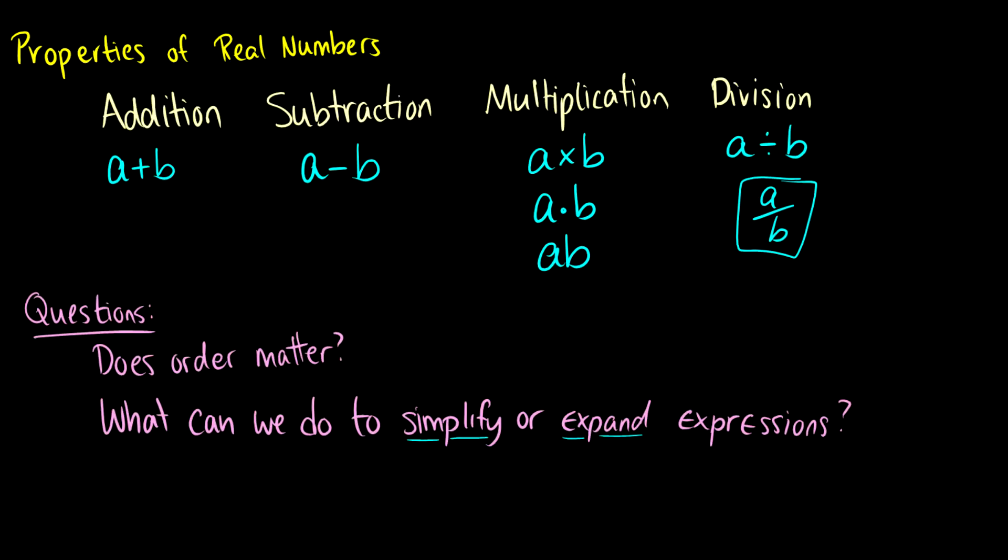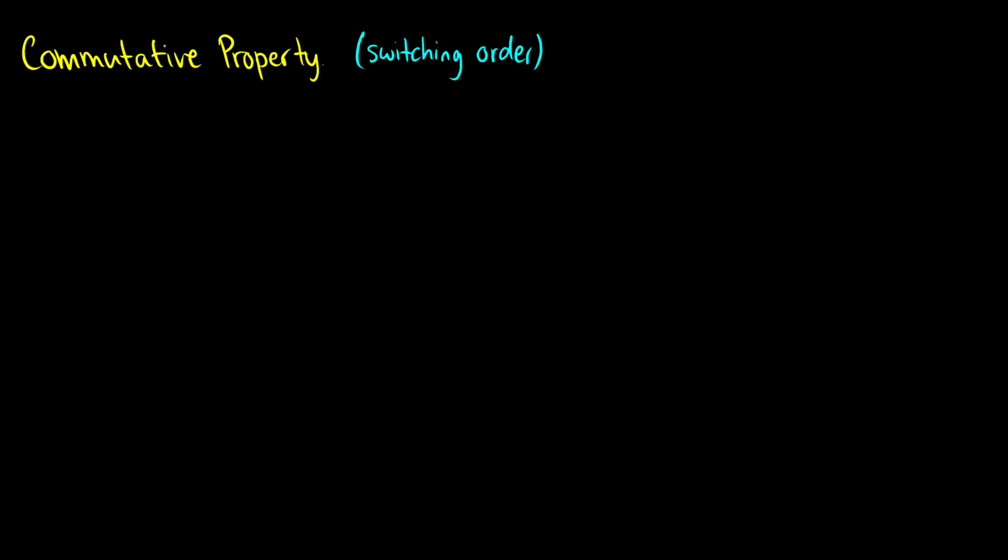So we have three properties here. You don't have to learn the names, but I think it's really good to, because in discrete math, you'll come across this some more. And in later mathematics, it's good to know these names. So one is the commutative property. And that means that we can switch the order of how we do things. So if we have a plus b, then really what we have is b plus a, the order doesn't matter here.